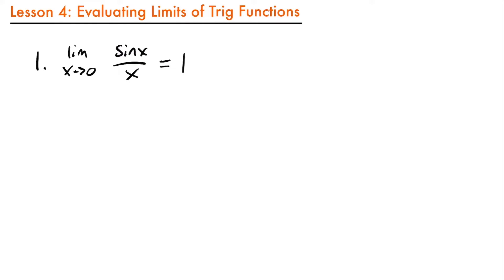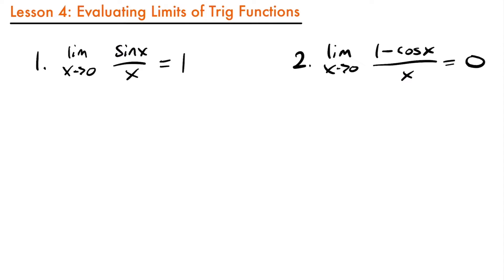The second special limit is: the limit as x approaches 0 of 1 minus cosine x over x equals 0. These two limits are very important because they're going to show up a lot in different limits that involve trig functions.